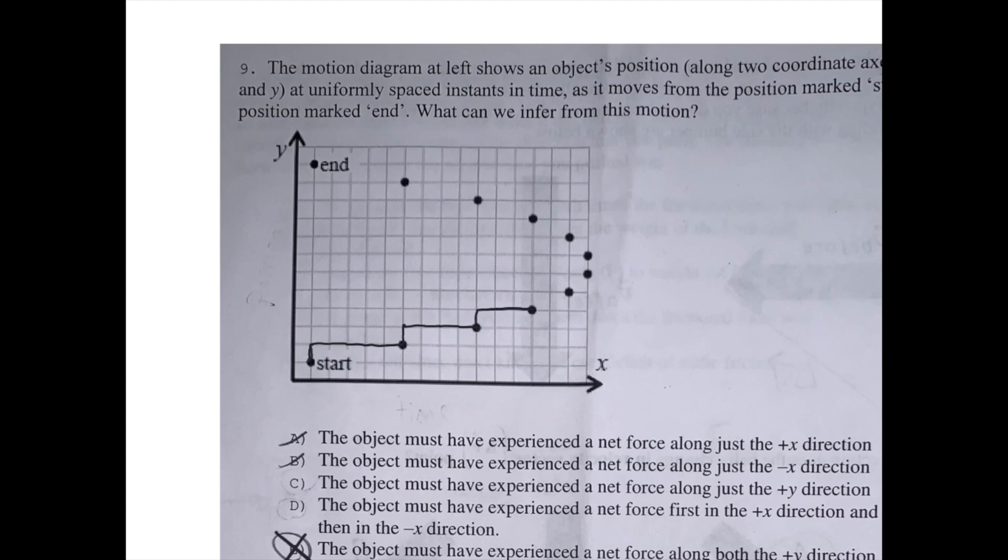Rise over run is 1 over 3, then 1 over 2, then 1 over 1. Then, at this point, you're just rising 1y and no x. And then you begin going in the negative x direction.